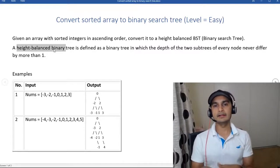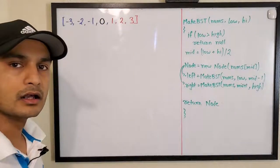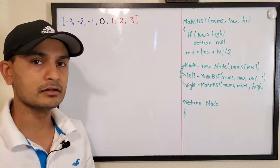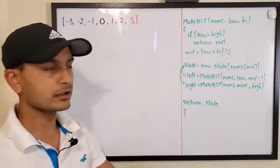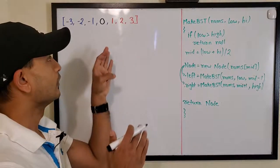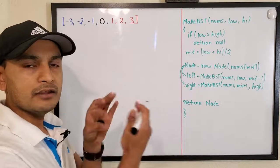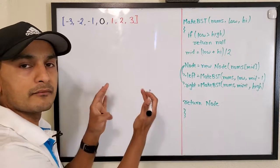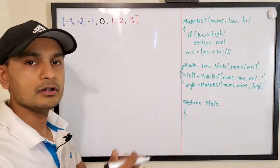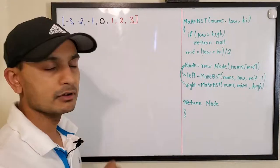We'll do a couple of examples on the whiteboard to understand how to solve it, then come back and run the code. Our array will be minus three to three. The approach is a recursive function where we split the array in two halves. We take the middle element as the current node, everything to the left becomes the left subtree, and everything to the right becomes the right subtree, recursively, until all elements are placed.